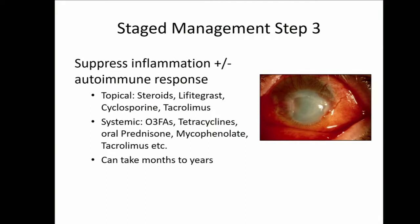Step three: any inflammation on the ocular surface, any autoimmune response — it's very important that it is suppressed. You can do that topically or systemically, and this can take months to even years. We found that especially in our chemical injury patients, those who had their chemical injury five to ten years ago and then undergo reconstruction do much better, because the ocular surface has had a chance to really quiet down.